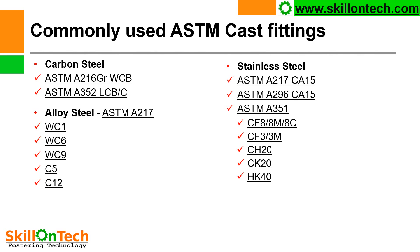Commonly used ASTM cast fittings — these fittings are basically castings. In carbon steel: ASTM A216 WCB, used for high temperature service or utility services; ASTM A350 LCB B and C. Alloy steel: ASTM A217 WC1, WC6, WC9, C5, C12. In stainless steel: ASTM A217 CA15, ASTM A296 CA15, ASTM A351 CF8, CF8M, CF8C, CF3, CF3M — in CF3M there is low carbon percentage, where M means low carbon. CF8 is equivalent to 304 and CF3 is equivalent to 316. Also CH20, CK20, HK20.